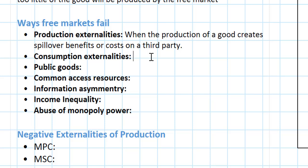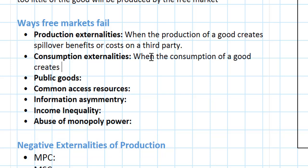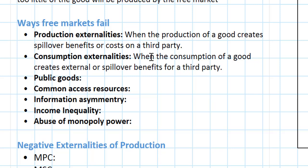Some goods create what we call consumption externalities. These exist when the consumption of a good creates external or spillover benefits for a third party. In a future lesson we'll introduce and give some examples of consumption externalities, and talk about how in some cases when a good is consumed a third party not involved in the consumption of that good will either be helped or possibly even hurt. In such situations the amount of the good produced and consumed by the free market will not equal the socially optimal quantity.